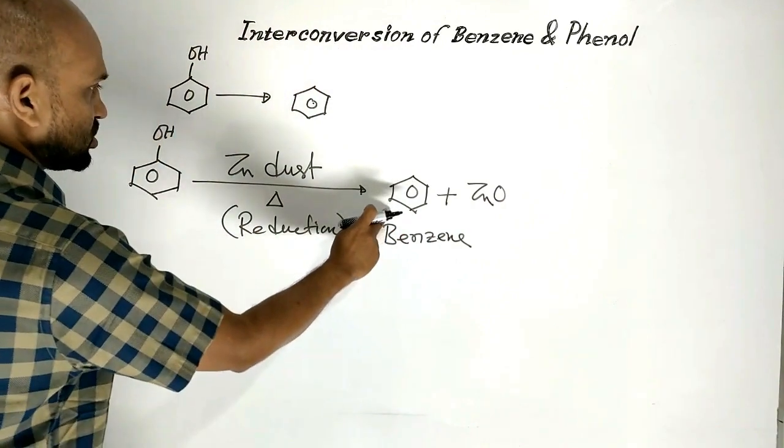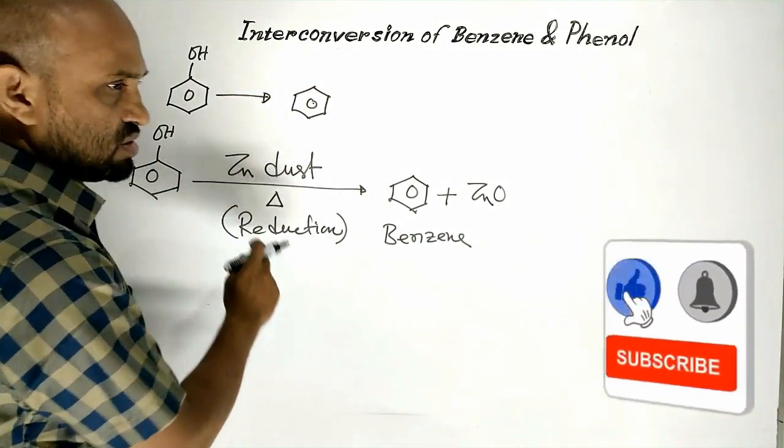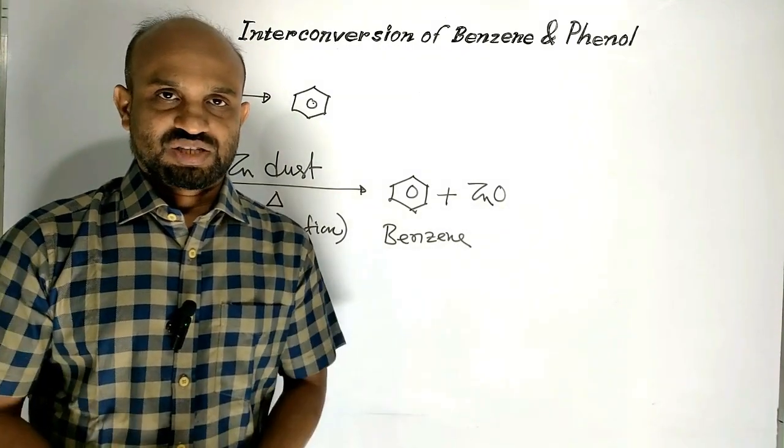So benzene is obtained from phenol through this reaction. Interconversion of benzene and phenol. Thanks for watching.